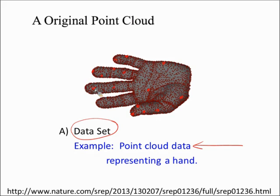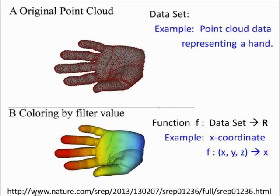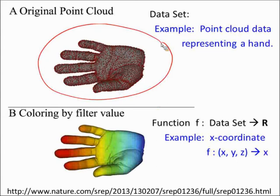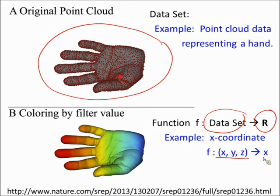The next step is to color the data by filter values — we want to reduce complexity. We've got thousands of points and we want to project. This is actually standard in data analysis. In our case, the data set is a three-dimensional hand, and we will project it onto one dimension — the x-coordinate. So every data point with coordinates X, Y, and Z gets projected onto the x-coordinate, and we see how it projects.